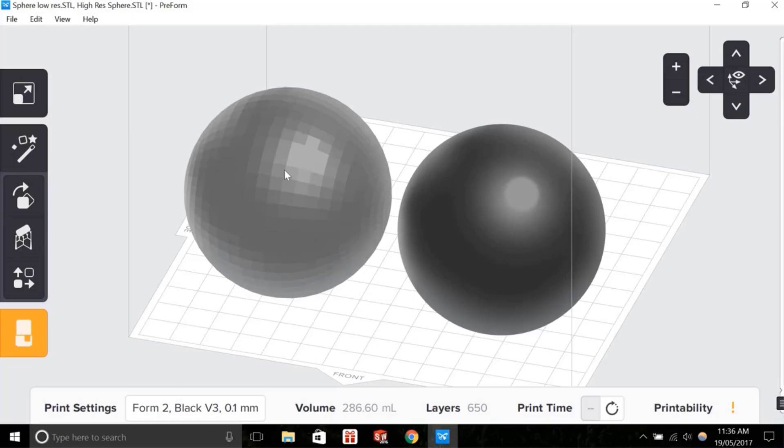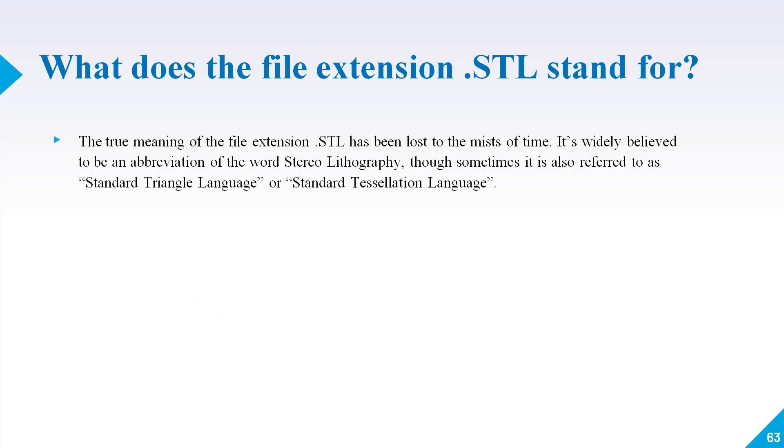The true meaning of the file extension dot STL has been lost to the mists of time. It's widely believed to be an abbreviation of the word stereolithography. Stereolithography was the first 3D printing technique which was discovered by Charles Hull in 1984, though sometimes it is also referred to as Standard Translation Language or Standard Triangulation Language.